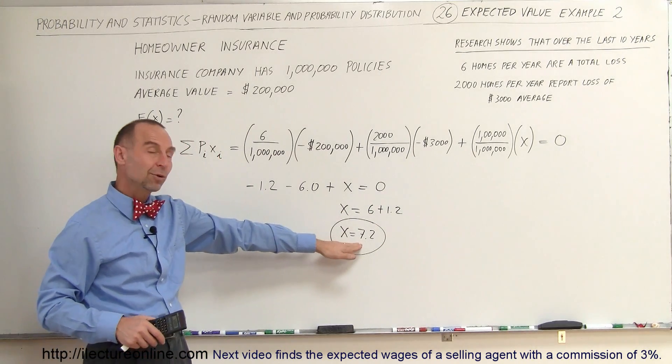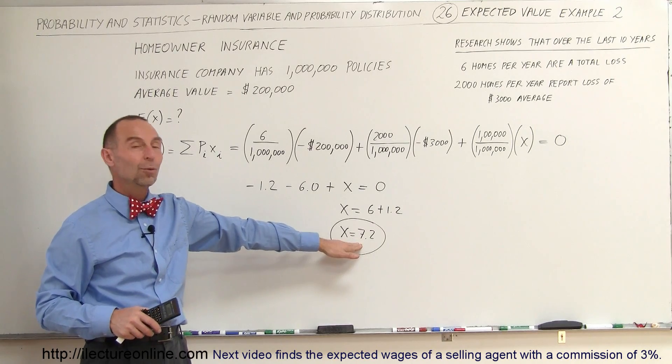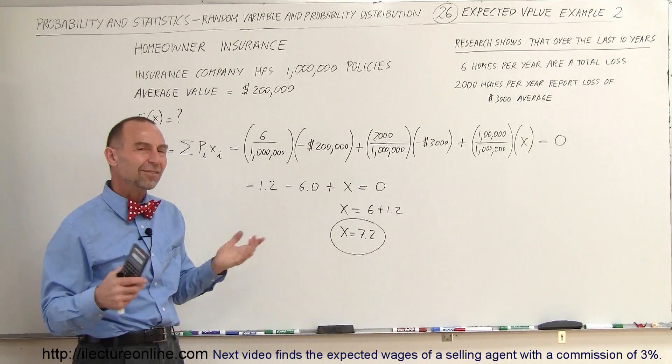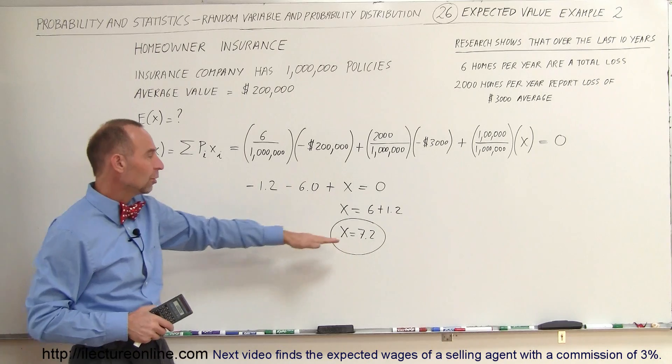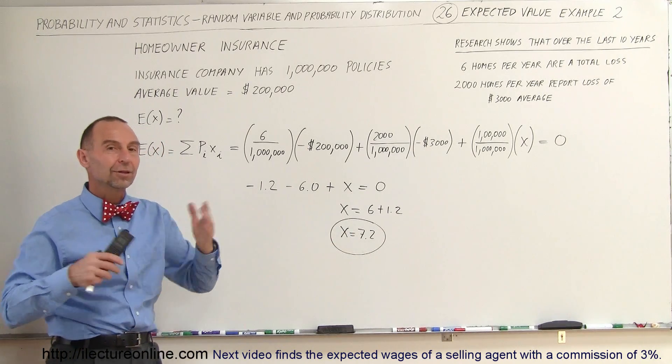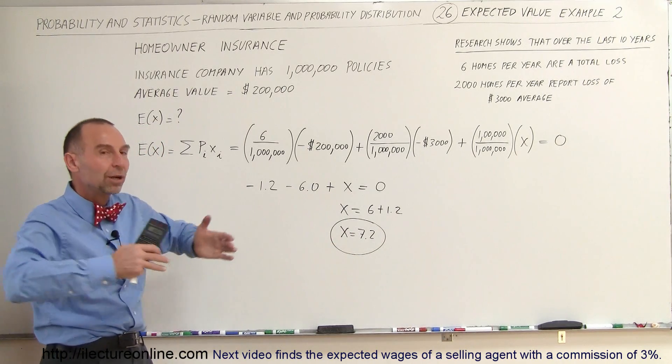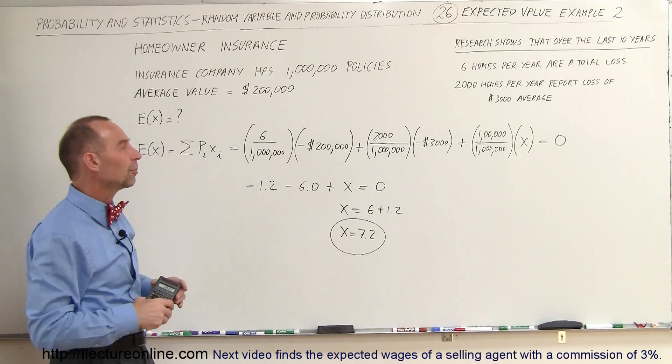We'd only have to pay premiums of $7.2 per homeowner to cover that insurance. That's the nice thing about insurance, that a relatively low premium can cover catastrophic losses if we spread it over a large enough number of people.